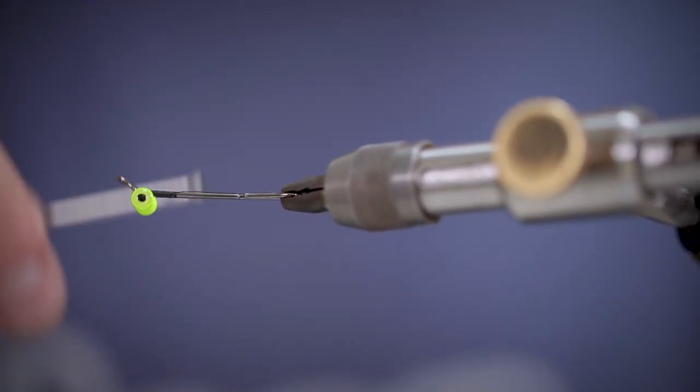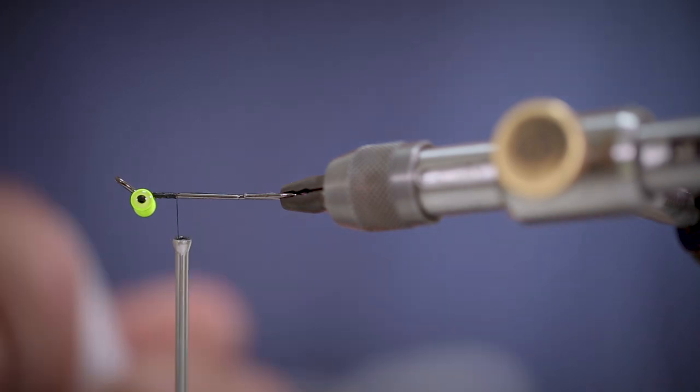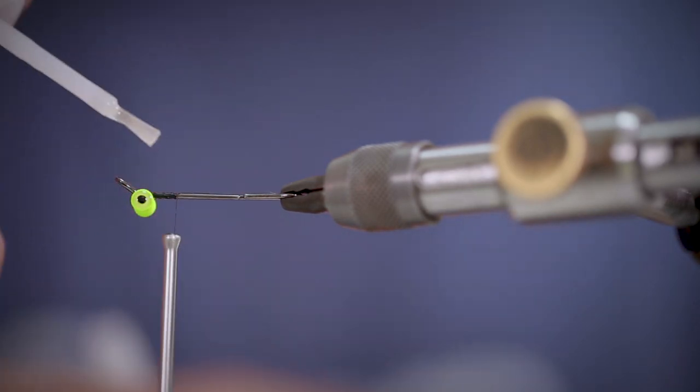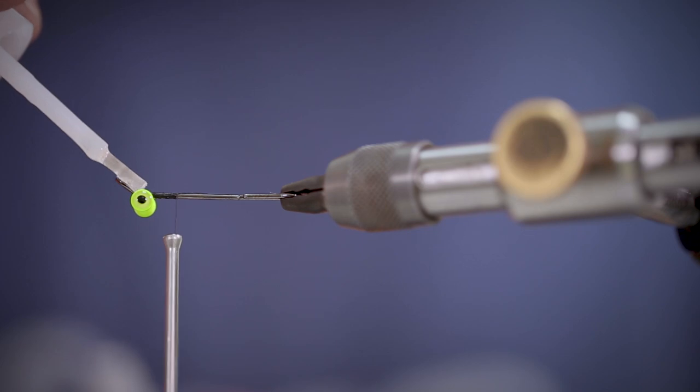Make sure to get plenty of turns until you're happy that everything is nice and secure and then add a little bit of superglue just to finish off this section of the fly.